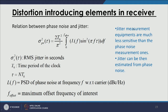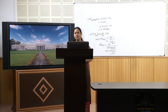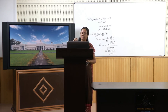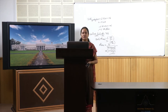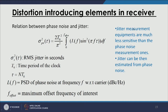Jitter measurement equipment is less sensitive because jitters are very small and we are not always able to capture the exact moment precisely. Phase noise measurement systems are more precise. So using the theoretical relation between these two, we can use phase noise measurements in the frequency domain and then use this formulation to get our RMS jitter in seconds.